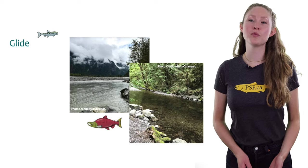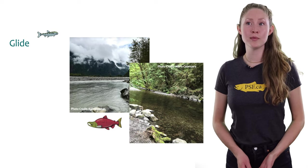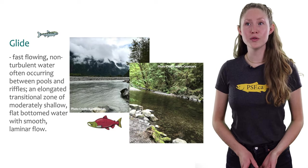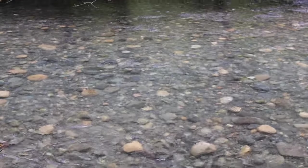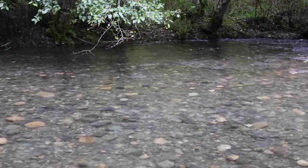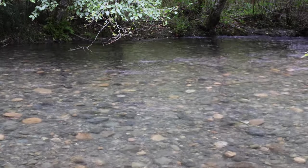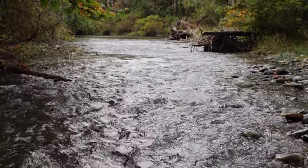Now we're going to talk about glides. A glide is an area of smooth or non-turbulent but fast-flowing water. They're often found between pools and riffles, which we call an elongated transitional zone. Glides are areas of the stream with moderately shallow, flat-bottomed water with smooth laminar flow — laminar is just a science word for smooth. These parts of the stream are excellent smooth migration corridors for salmon.